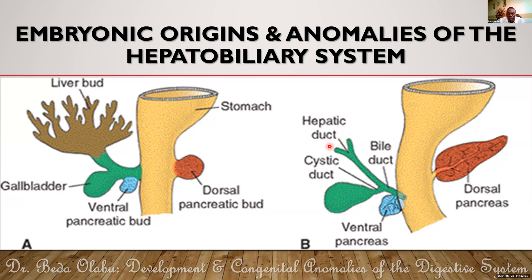To summarize: the hepatic diverticulum divided into the pars cystica and pars hepatica. The common bile duct comes from the common stem of the hepatic diverticulum. The cystic duct and gallbladder come from the pars cystica. The common hepatic duct as well as the right and left hepatic ducts come from the pars hepatica.